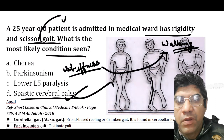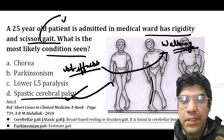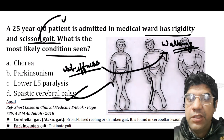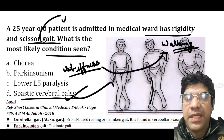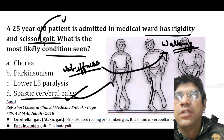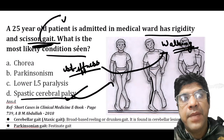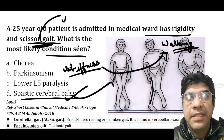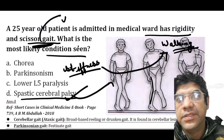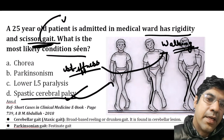Cerebral palsy is a group of neurological disorders affecting movement, posture, and coordination, caused by damage to the developing brain during pregnancy or childbirth. Spasticity is a common feature. The scissor gait in this condition is primarily due to spasticity and imbalance in muscle tone across the hip adductors and other leg muscles. Excessive muscle tone causes the legs to come together, leading to a crossing pattern during walking.